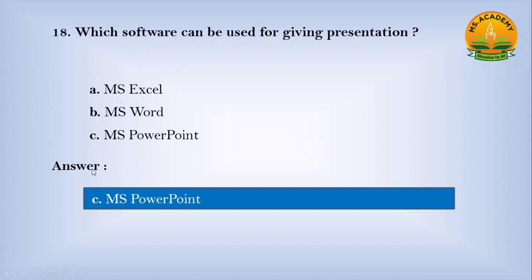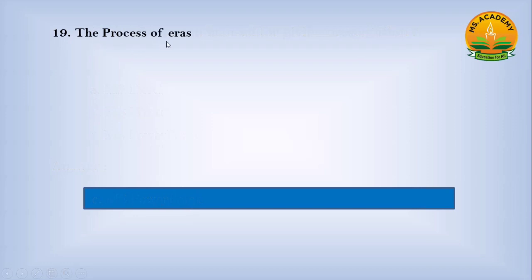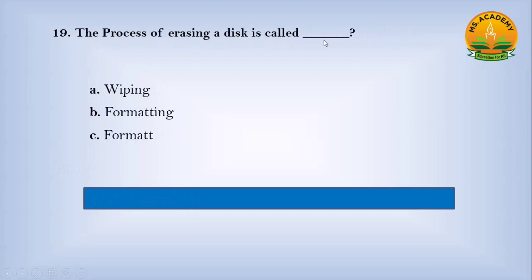Which software can be used for giving presentations? Option A: MS Excel, option B: MS Word, option C: MS PowerPoint. Answer: C — MS PowerPoint. The process of erasing a disk is called — option A: wiping, option B: formatting, option C: formatting. Answer: C — formatting.